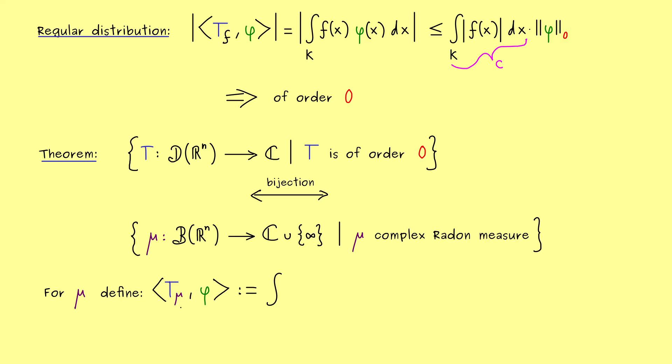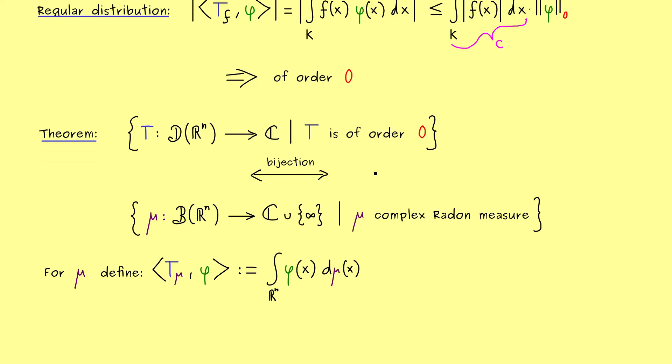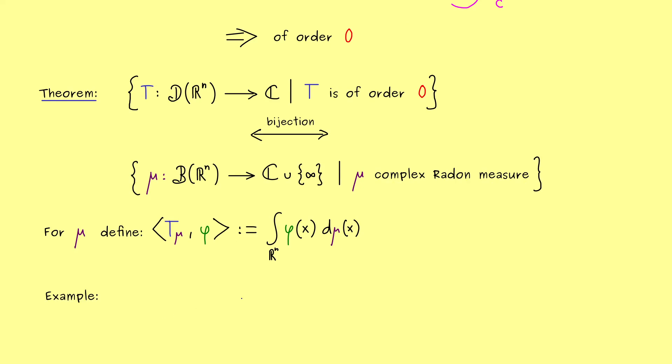So more precisely, we have φ of x d μ x. So this is a well defined integral. And we only integrate over a compact set. Namely, the support of φ. So what we get out here, is a finite complex number. And now it's not hard to show at all, that this is indeed a distribution of order 0.